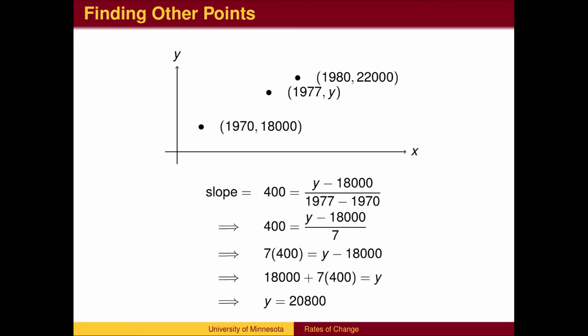We can use the slope to find other data points. Suppose we are interested in the population in 1977. Since we are assuming the rate of change is constant at 400 people per year, the slope to the new point should also be 400. We can solve for y by comparing the 1977 population to the 1970 population.